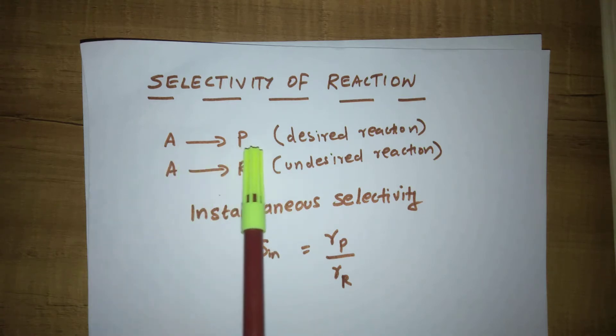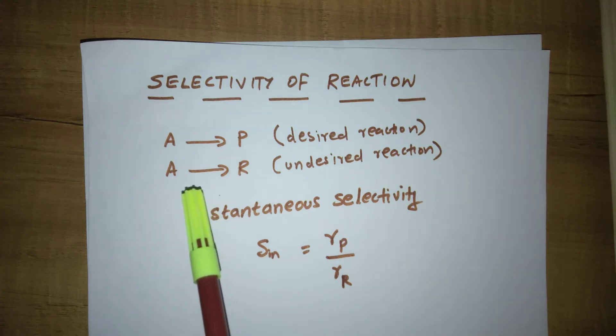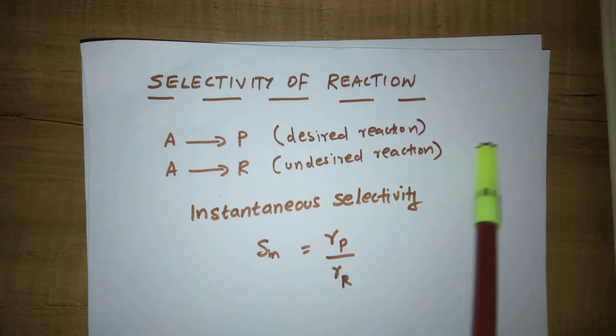A gives P is the desired reaction. From this, we will get a desired product. A gives R, that is undesired reaction or you can call this a side reaction that will give an undesired or unwanted product.